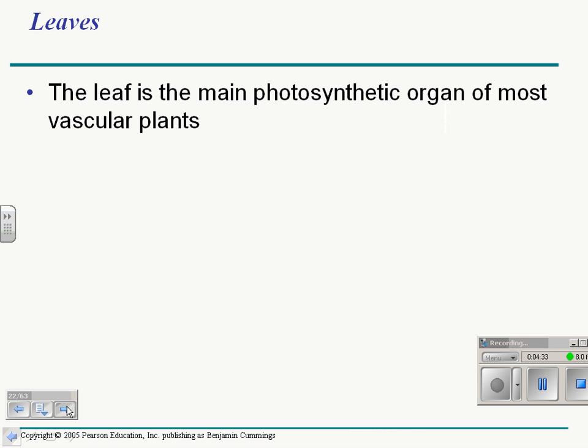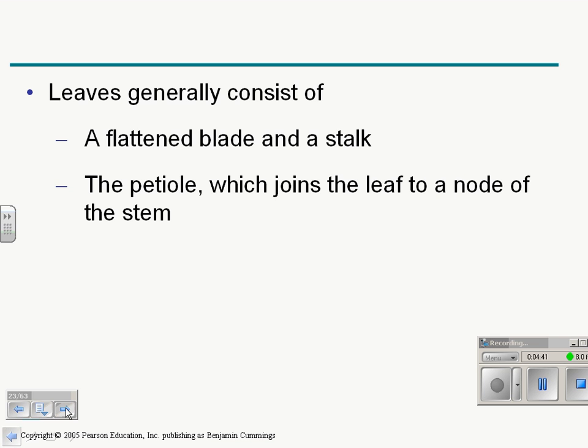The leaves, we're going to look at leaves in lab in some detail. But this is where photosynthesis happens. And I'm going to assume you already know that. Generally, leaves consist of the blade and a petiole. And just for terminology's sake, here's the leaf, that's the petiole. Here's the blade of the leaf, and so on.